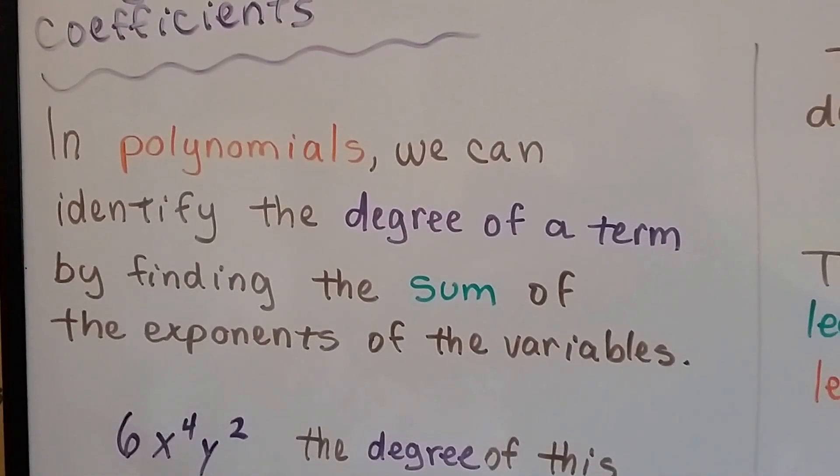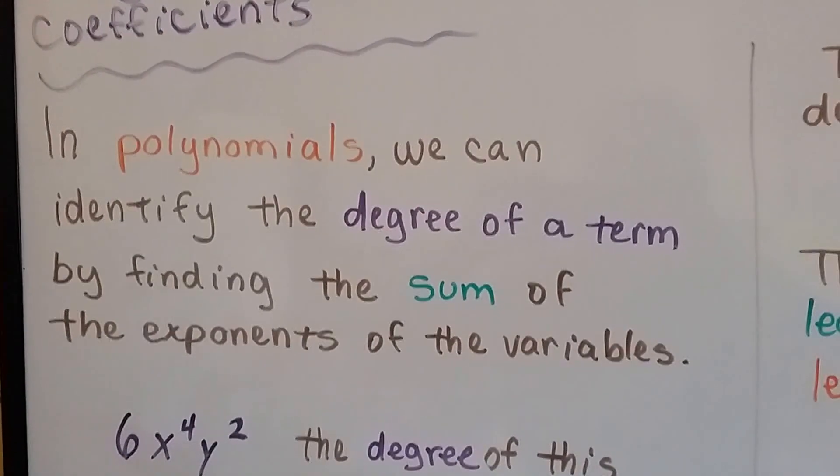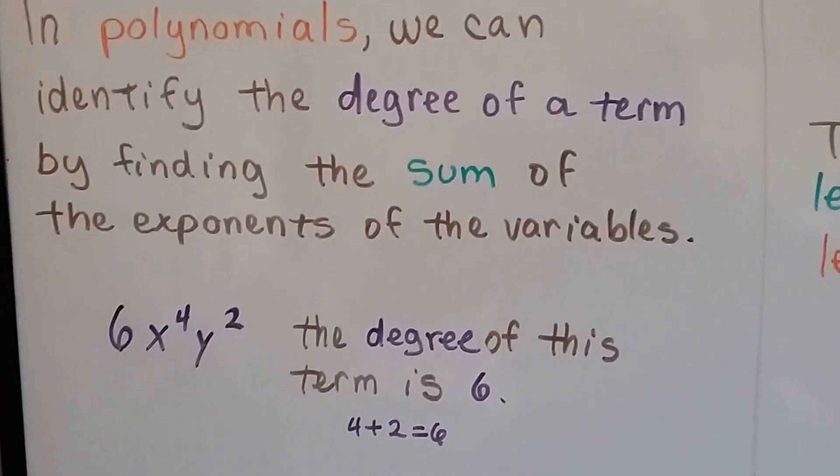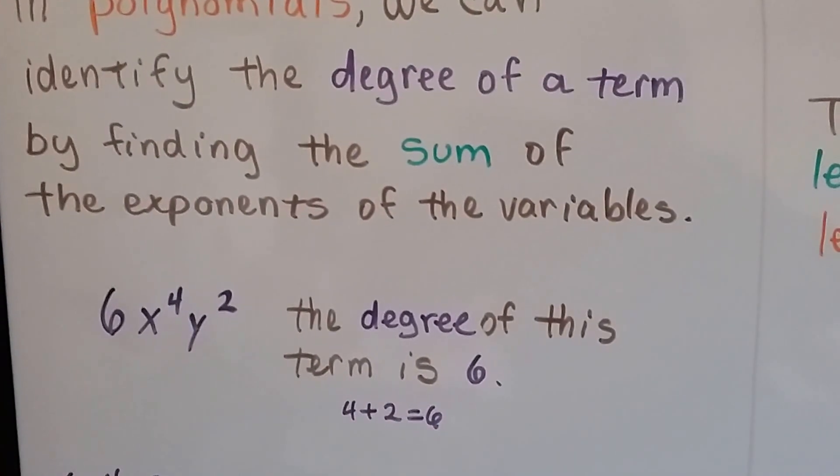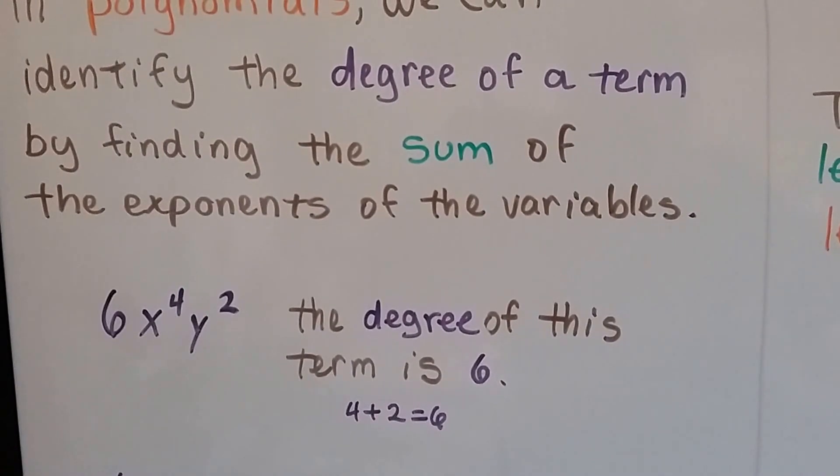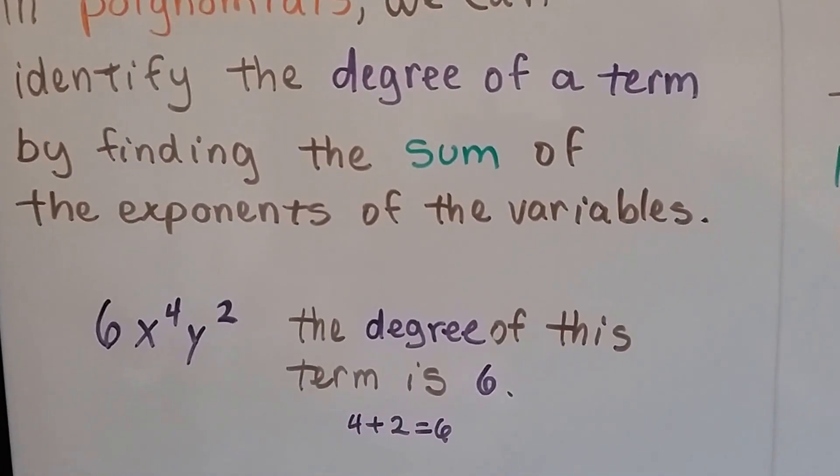In polynomials, we can identify the degree of a term by finding the sum of the exponents of the variables. 6x to the fourth power y to the second power, the degree of this term is 6, because we add the exponents 4 and 2 and get 6.